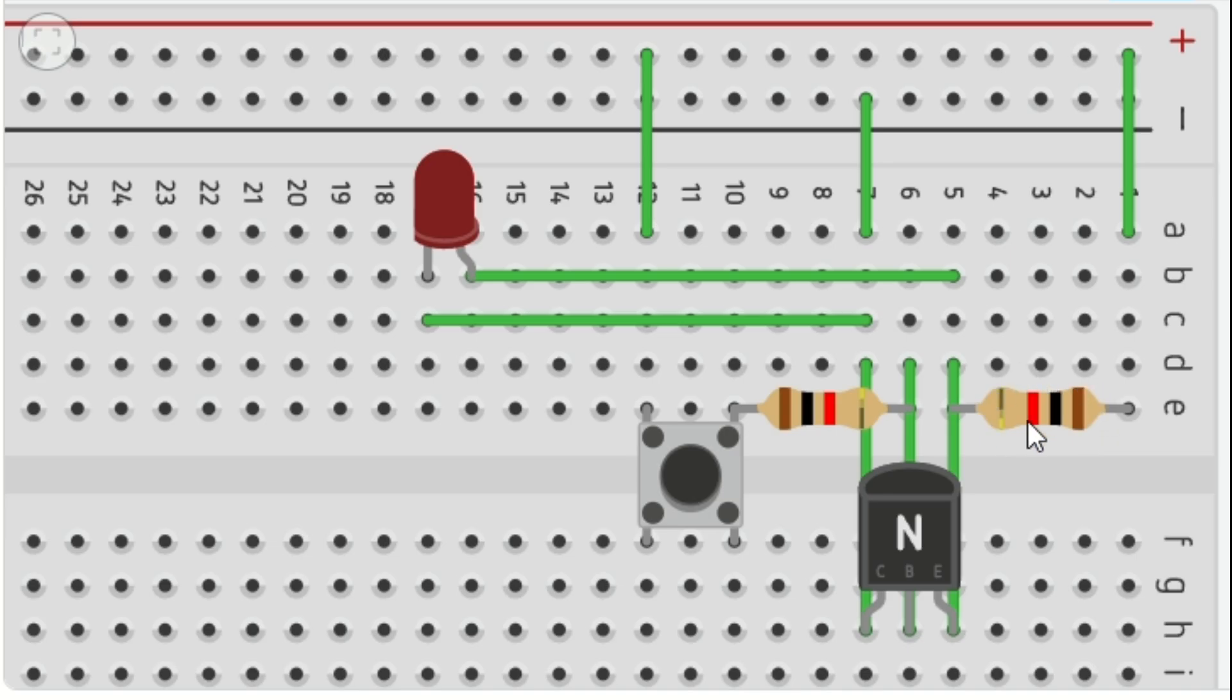A NOT gate consists of two resistors, a transistor, a LED bulb, and a button.